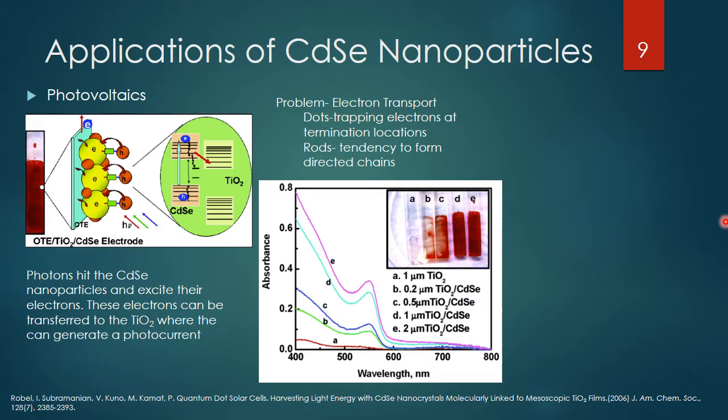What are some applications for these small monodispersed cadmium selenide quantum rods? One thing you can do is incorporate them into photovoltaic cells — solar cells that absorb light from the sun. You would include them alongside another semiconductor with a much larger bandgap, such as titanium oxide, because cadmium selenide absorbs light in the visible spectrum — part of the light coming from the sun.